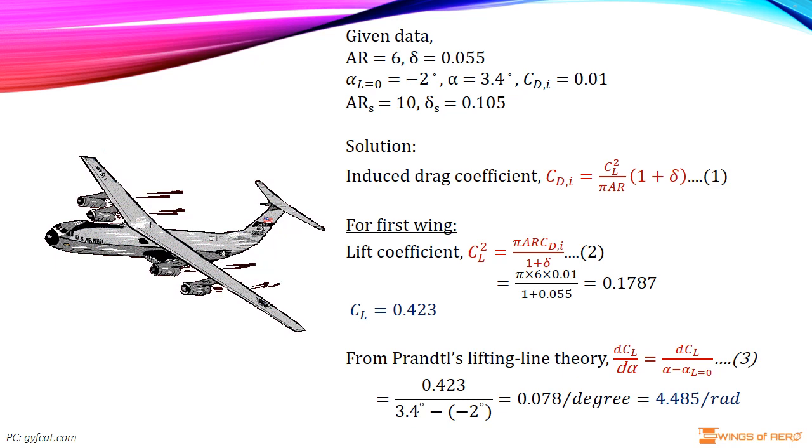After solving, we have lift slope of the first wing is 4.485 per radian.